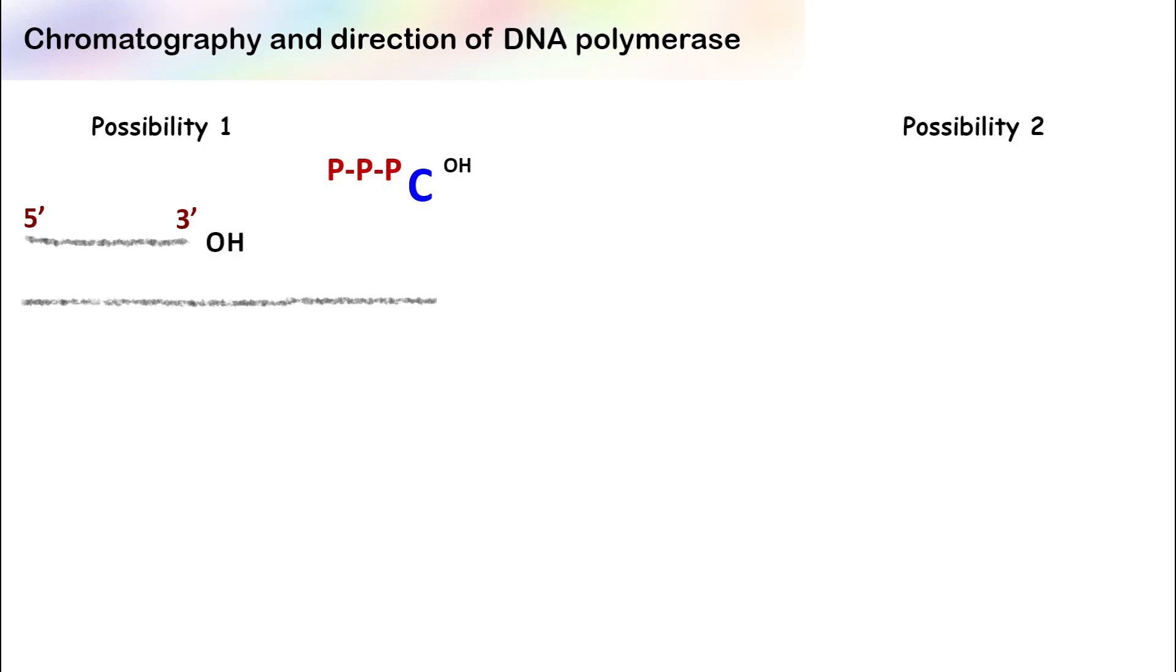In this case, the hydroxyl group will lose its H+ ion and become an oxy anion. This oxy anion will react with the phosphate and form a phosphodiester bond. In possibility two, the hydroxyl group which is with the nucleotide will react with the five prime phosphate and form phosphodiester bond.